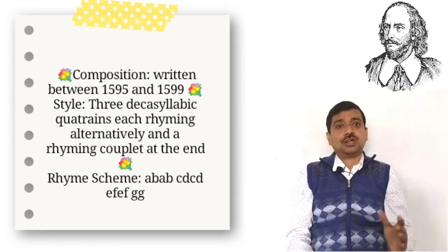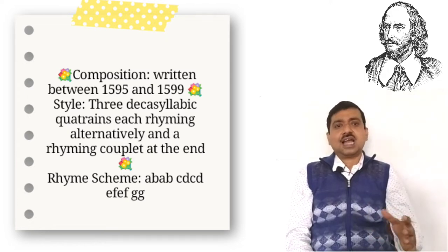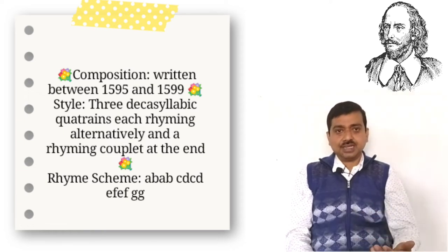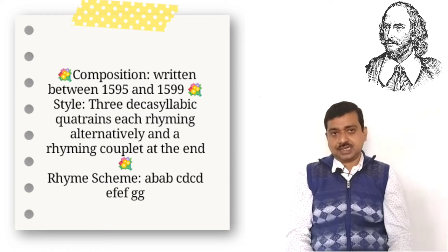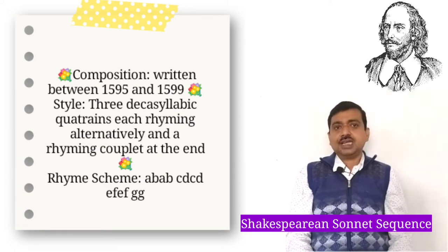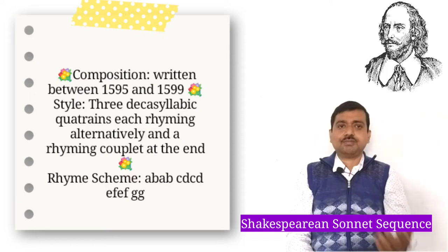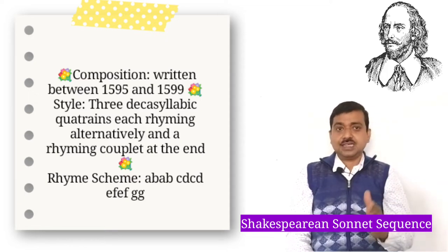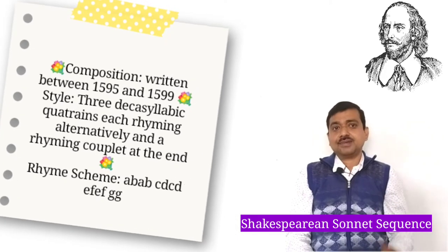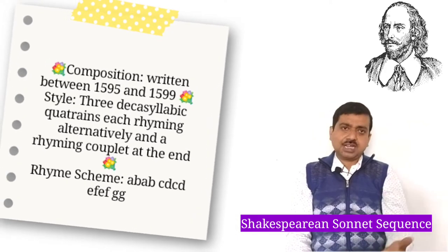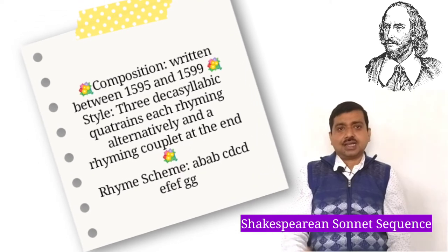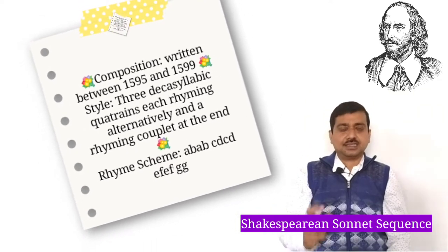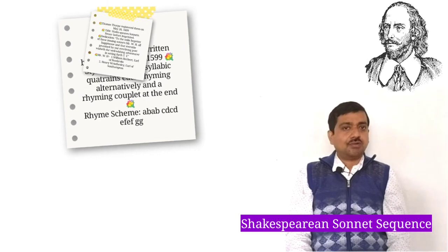His sonnets differed from those of his predecessors in that they had three decasyllabic quatrains, each rhyming alternatively, and a rhyming couplet at the end. In most of his sonnets, the rhyme scheme follows a-b-a-b, c-d-c-d, e-f-e-f, g-g. This little information on the structure of Shakespearean sonnets is very essential.